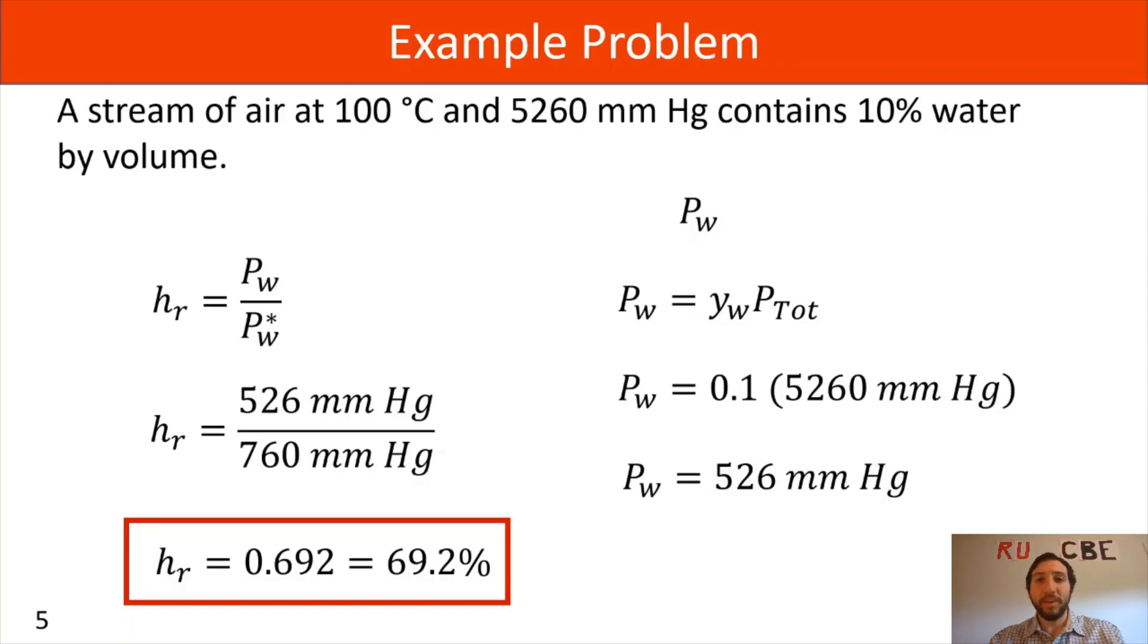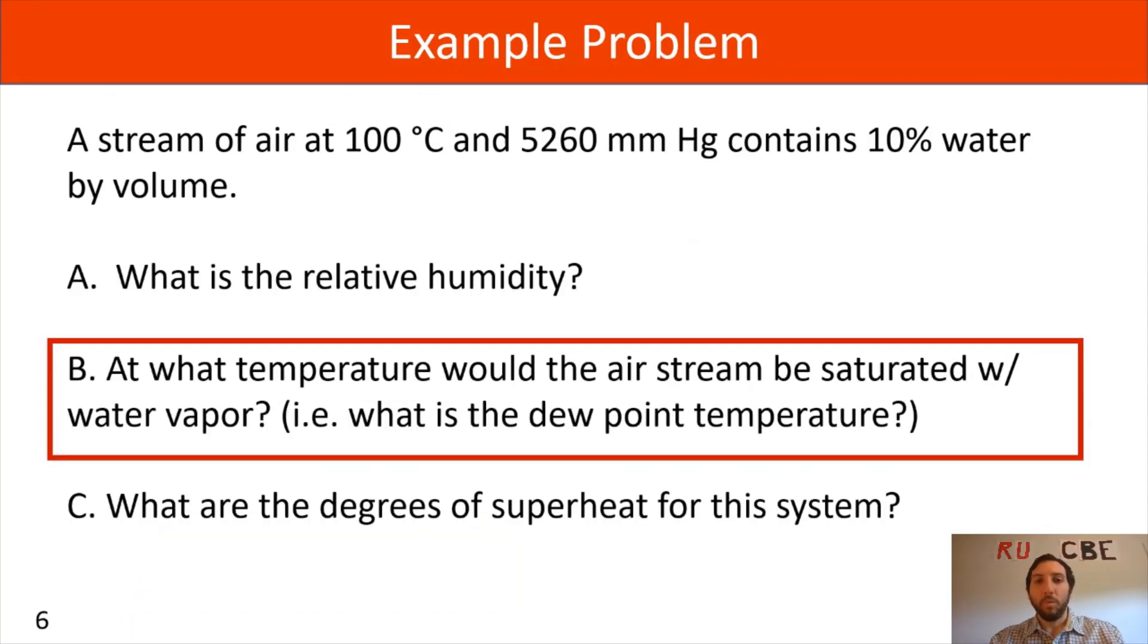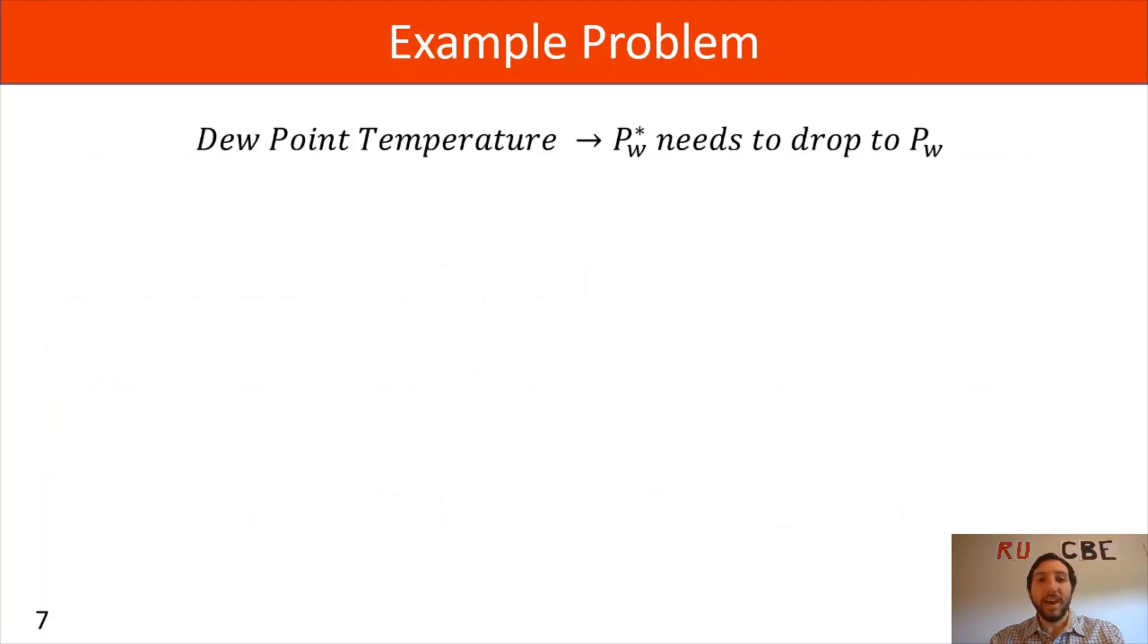Moving on to part B, we're looking for our dew point temperature. What temperature would we be saturated with water vapor? For our dew point temperature, we need to drop our Pw star to the point where it's equal to our current Pw.